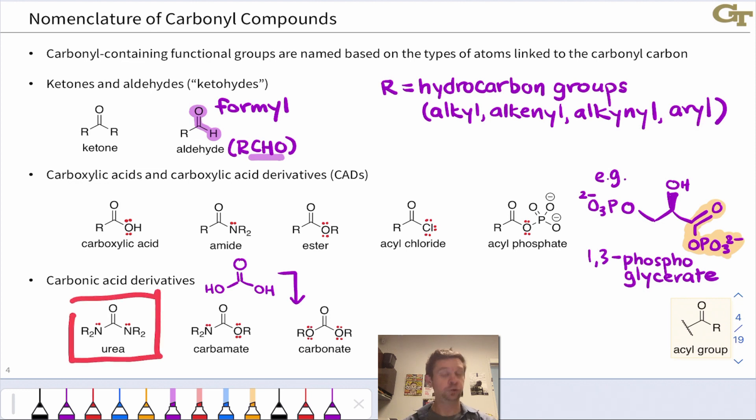Ureas are a very important class with two nitrogen groups linked to the carbonyl carbon. Carbamates have a nitrogen group and an alkoxy group. Carbonates have two alkoxy groups linked to the carbonyl carbon. We'll see these less in reactions, but they do have great practical importance. For example, polycarbonates are a very important class of polymers.